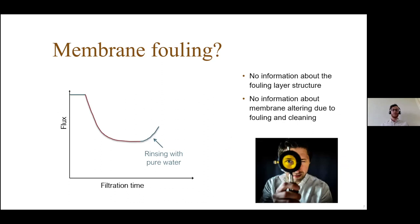This can be compensated by rinsing the membrane and washing away loosely attached compounds. This is reversible fouling that is removed. But there's still a difference between the flux at the end of rinsing and at the beginning of filtration. This is due to irreversible fouling - fouling that can only be removed by cleaning if at all. The problem is there's no information about the fouling layer structure and no information about the membrane altering due to fouling or cleaning.